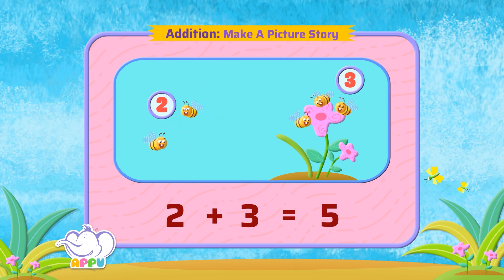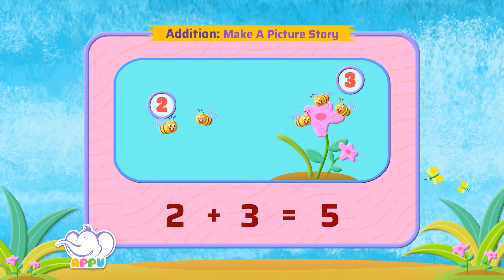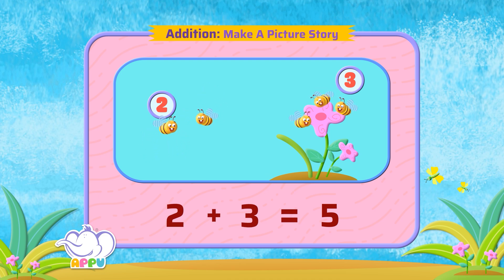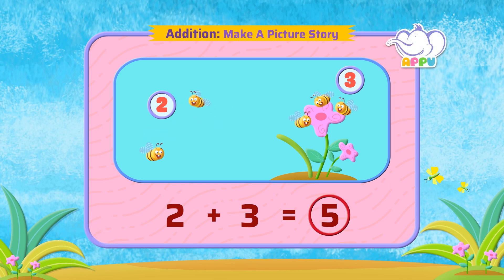We use the plus symbol for addition and this is the symbol for equal to. We can say two plus three equals five. So, the answer is there are five bees in all.